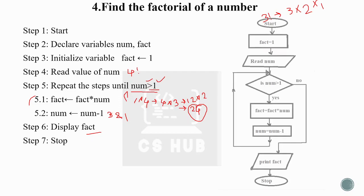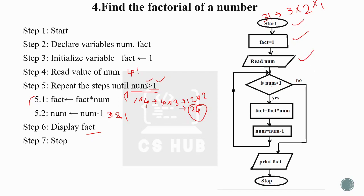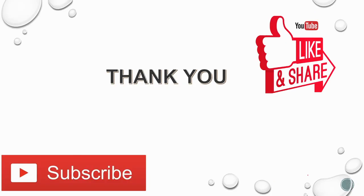This is the flowchart for the factorial program. Print fact, then stop. This is a loop symbol program. I hope the concept is clear. Thank you.